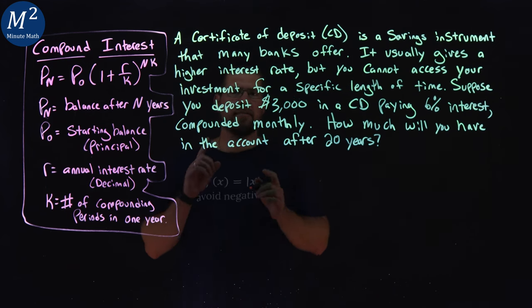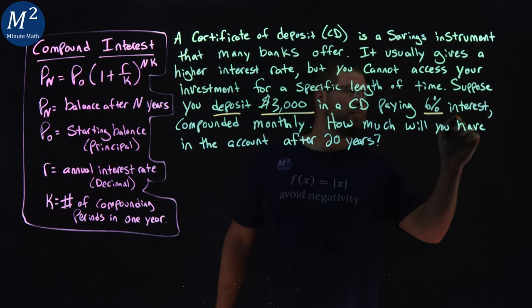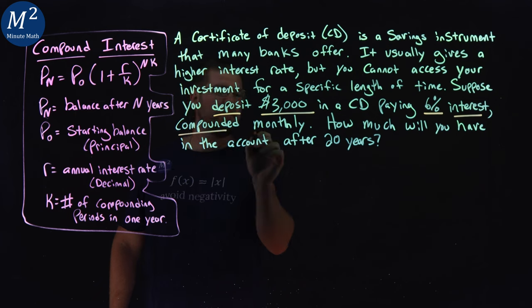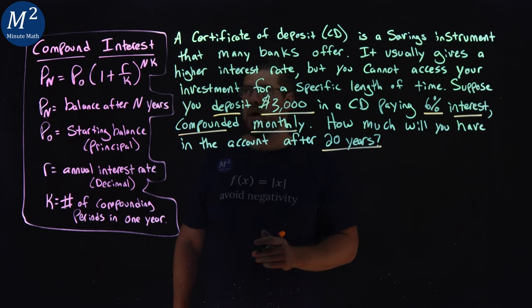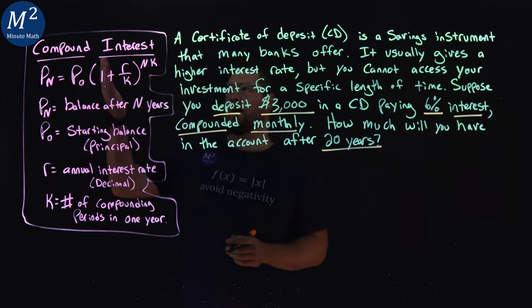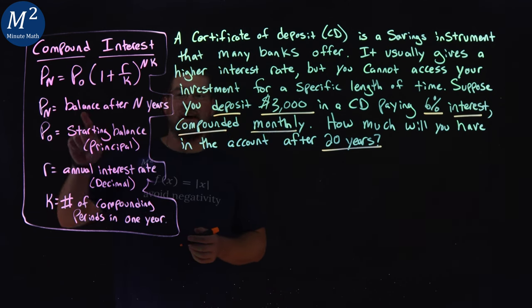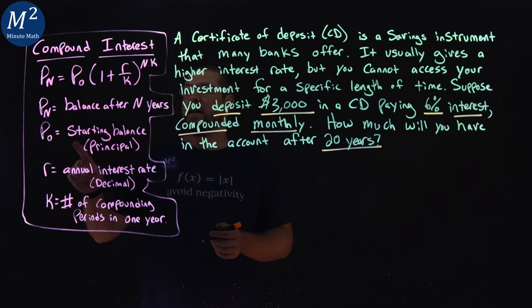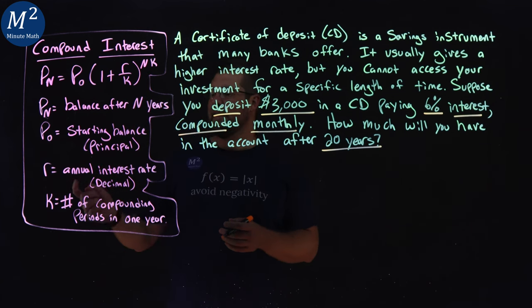Let's get some key parts here. We deposit $3,000 into a CD paying 6% interest, compounded monthly. How much will you have in the account after 20 years? Well, our formula here for the compound interest is: balance after n years equals our initial starting balance or principal times 1 plus our rate over the number of compounding periods in one year to the power of n, the number of years.